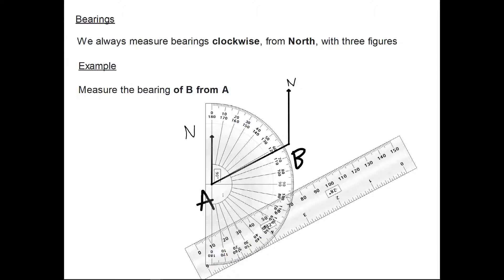So the bearing of B from A is 062 degrees. You need three figures for bearings, so if it's an acute angle you need to write 062. For example, if it were a right angle you'd write 090. So 062 degrees is the bearing of B from A.